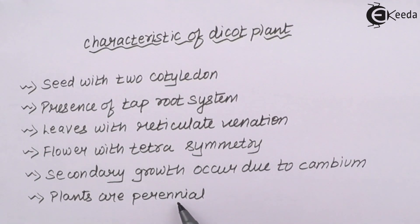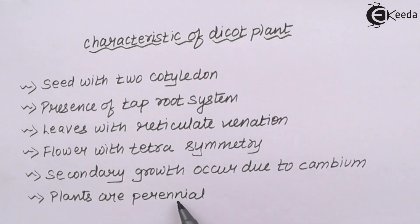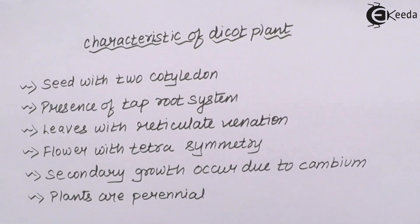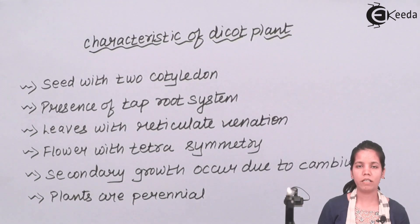These plants are perennial in nature — they grow anywhere. They require less amount of water and less association with the surrounding area. One characteristic of dicots is they require a lot of nitrogen, especially the dal variety — whether it is moong, matki, or any such pulses, they require nitrogen which is fixed by Rhizobium, a legume bacteria. Rhizobium is a soil bacteria that fixes nitrogen.